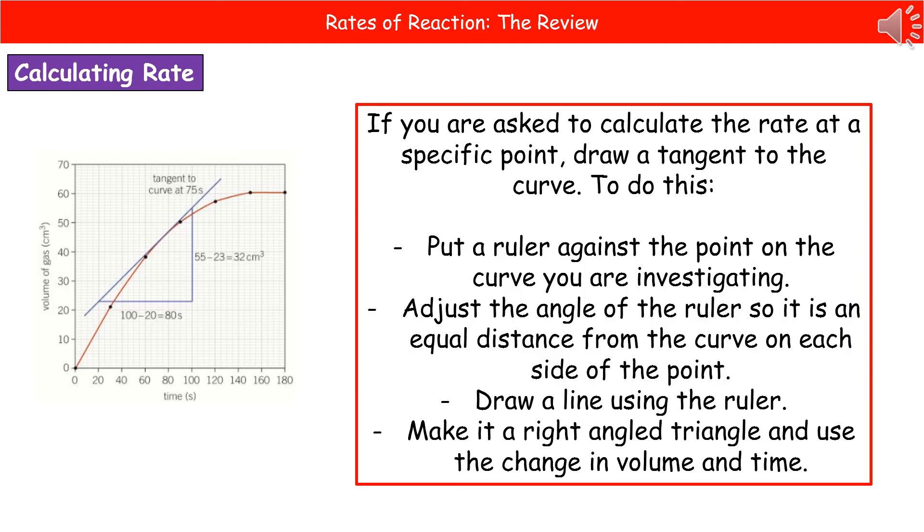Convert that line into the right angle triangle like we would do on our normal rate calculation. Obviously work out your difference in the time, the difference in the volume of gas, and then just divide the volume of gas by your time.